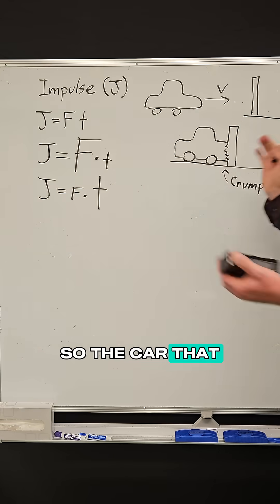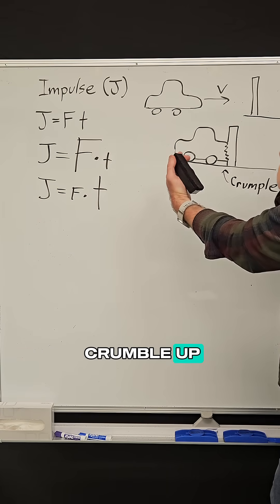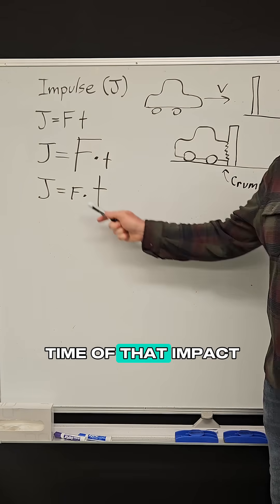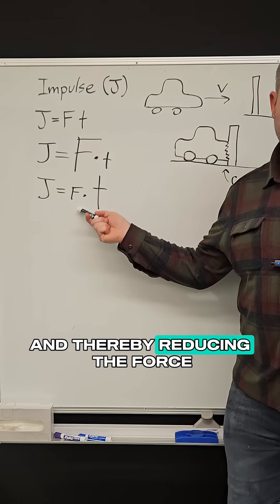So the car that allows its bumper to crumple up is actually extending the amount of time of that impact and thereby reducing the force.